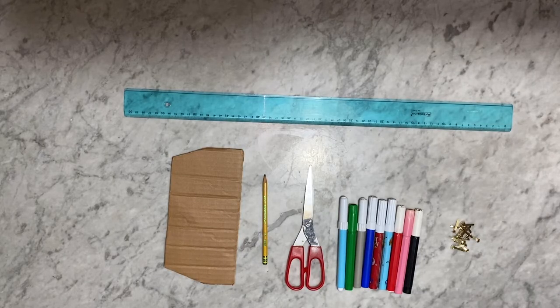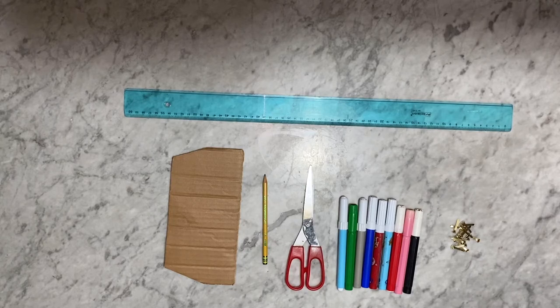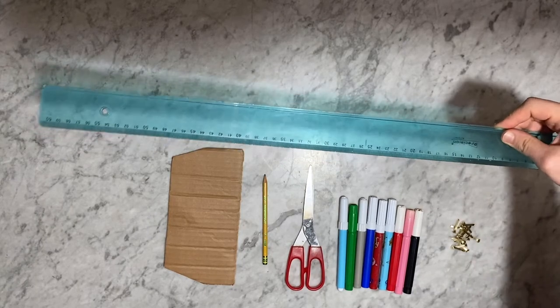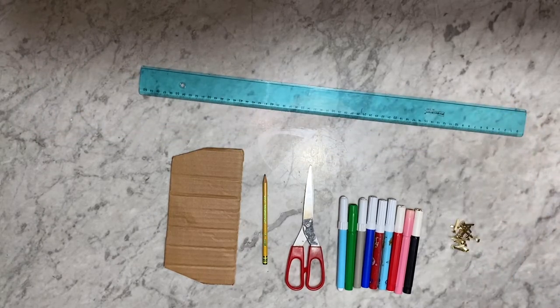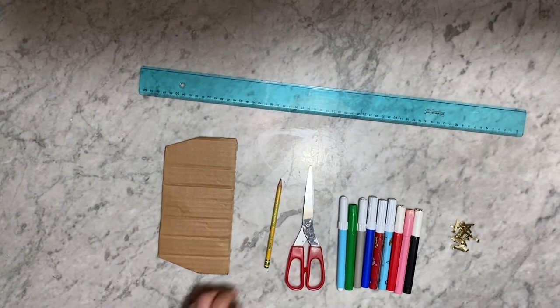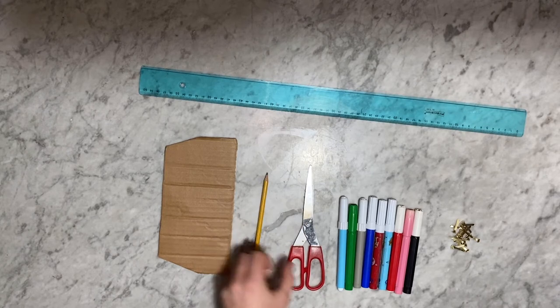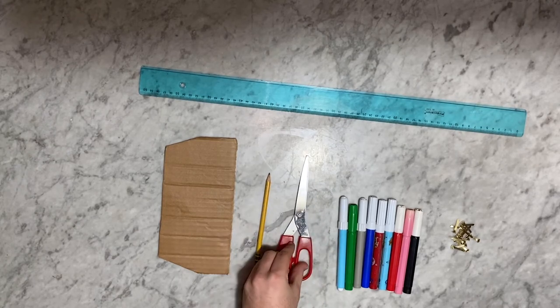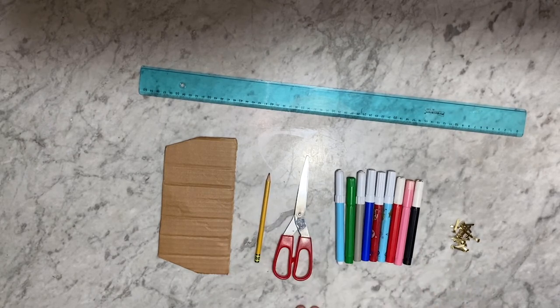To build moving shapes, we need a ruler, some cardboard, a pencil, some scissors, colored markers, and simple clips.